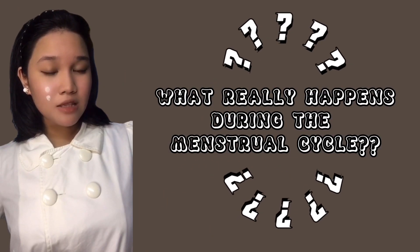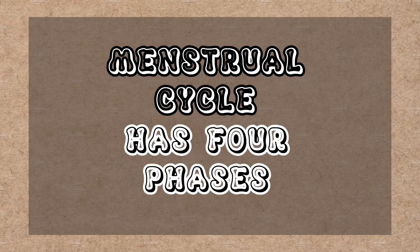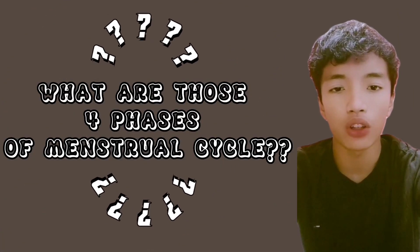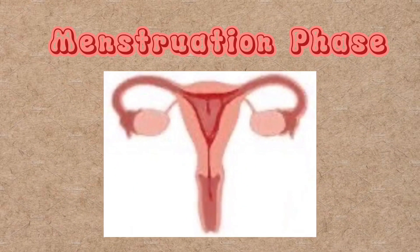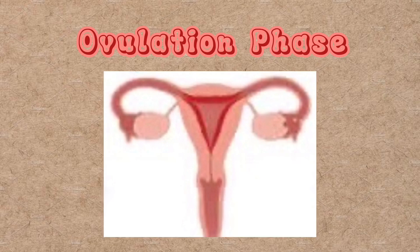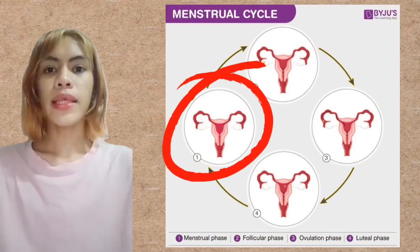What really happens during the menstrual cycle? The menstrual cycle has four phases: the menstruation phase, the follicular phase, the ovulation phase, and the luteal phase.